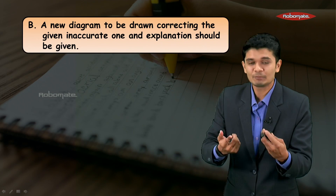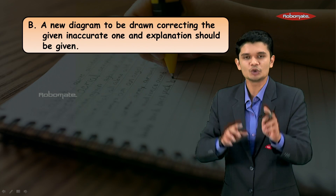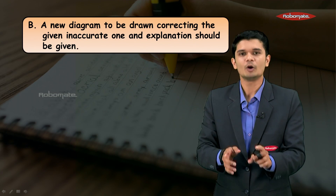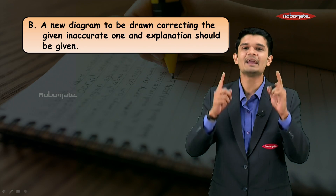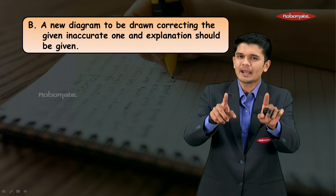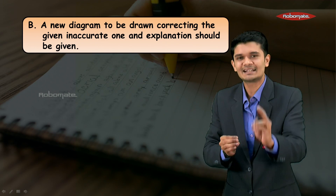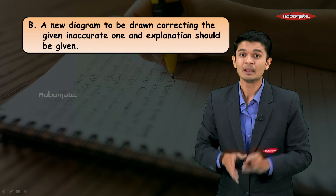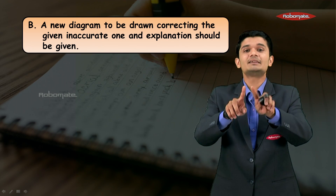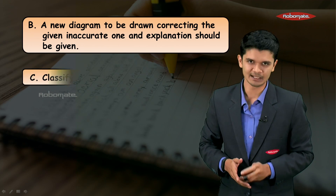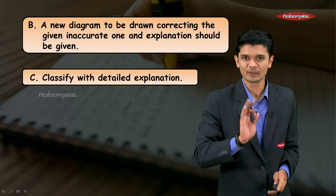The next question type involves drawing a new diagram by correcting a given inaccurate one, along with an explanation. You will be given an inaccurate diagram — the good part is you do not need to memorize an entire diagram. A basic outline will be available in front of you. Observe it carefully, correct the incorrect parts, and then draw the entire corrected diagram neatly and cleanly.